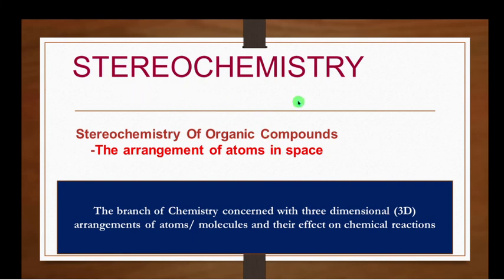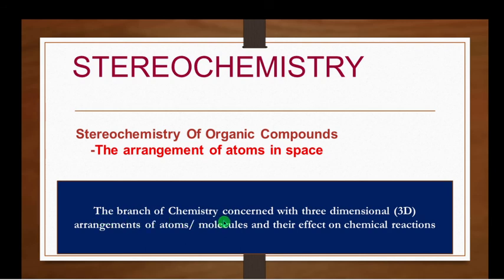What does Stereochemistry mean? Stereos means three-dimensional way of arrangements. Stereochemistry is the study of how molecules are affected by the way their atoms are arranged in space — that is, the arrangements of atoms or molecules in space. Simply, the study of relative spatial arrangements of atoms in a molecule. The branch of chemistry concerned with three-dimensional arrangements of atoms or molecules and their effect on chemical reactions is called Stereochemistry.